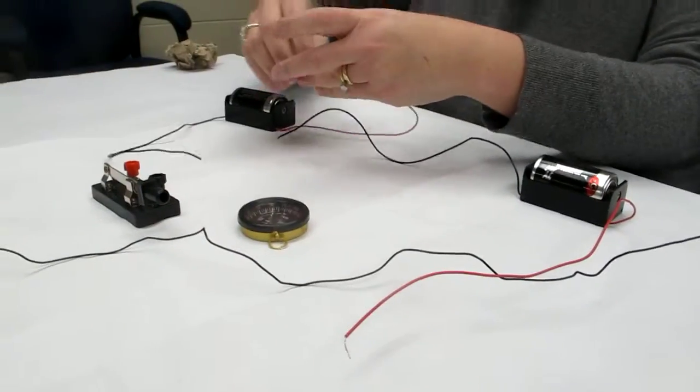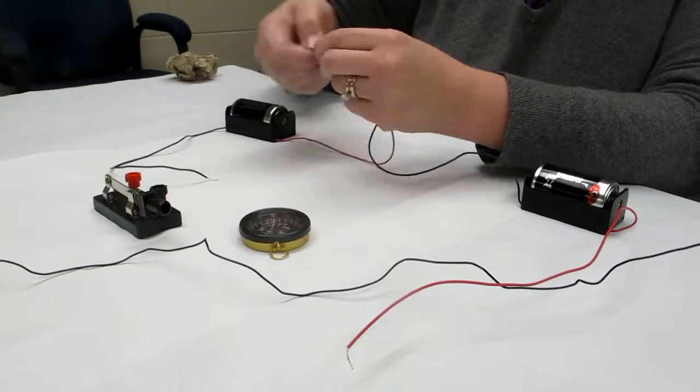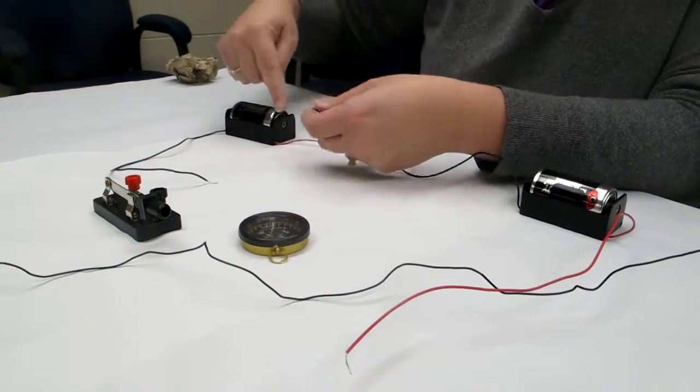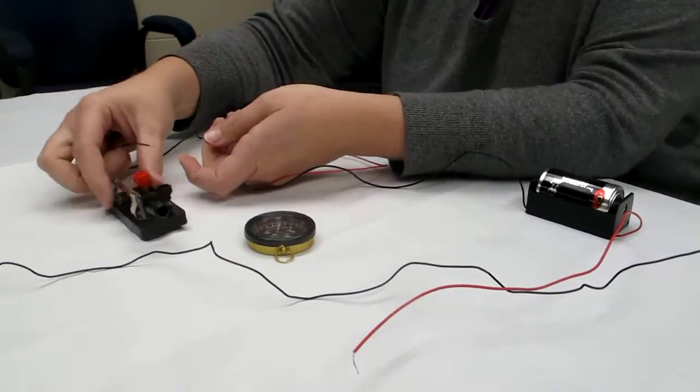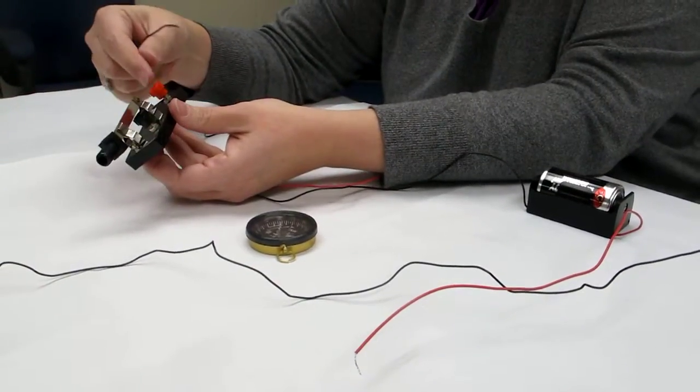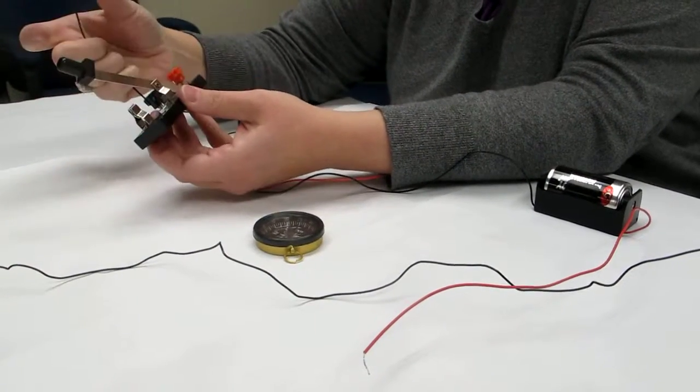Next, from that dry cell holder, and if the wires come apart, just twist them together again. From this dry cell holder, you're going to take the negative lead or wire and attach it to the positive tab on the knife switch. You can go ahead and open up that knife switch.